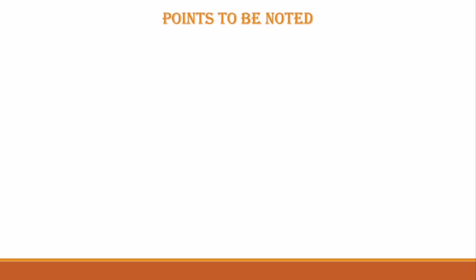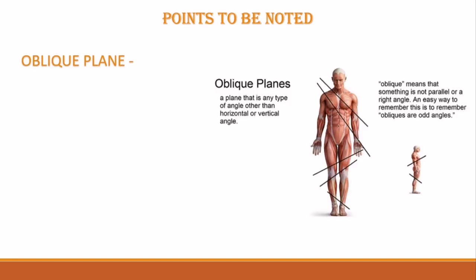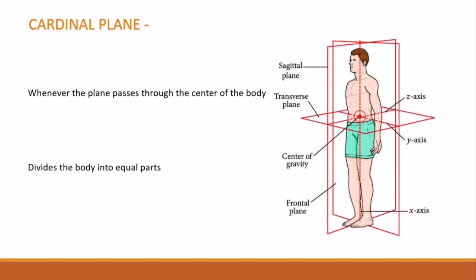Now let's look at two other planes: the oblique plane and the cardinal plane. Any plane other than the mid-sagittal, sagittal, coronal, and transverse planes is termed an oblique plane. The cardinal plane refers to any plane — whether sagittal, frontal, or transverse — that passes through the center of the body.